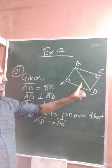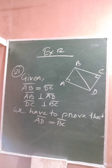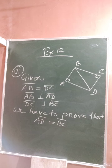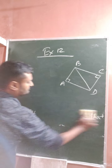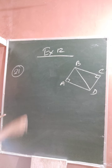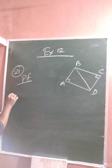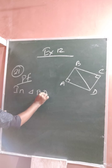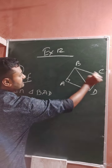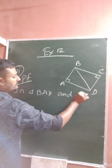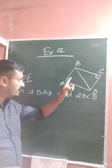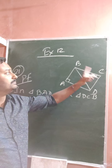We have to prove these two sides AD equal to BC. If we prove these two triangles are congruent, then automatically the corresponding parts of the congruent triangles are equal, that means AD will be equal to CB or BC. So now we take these two triangles. In triangle BAD and triangle DCB — you have to follow the pattern, we are taking BAD and DCB.